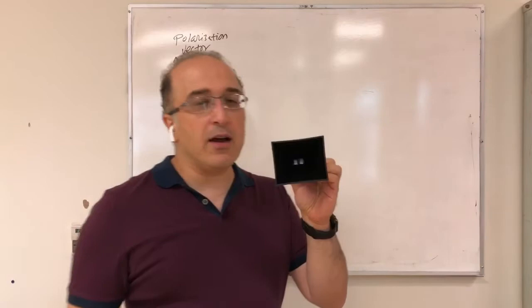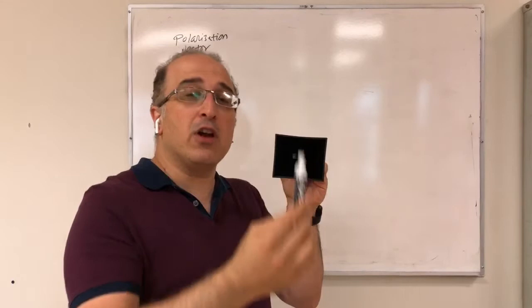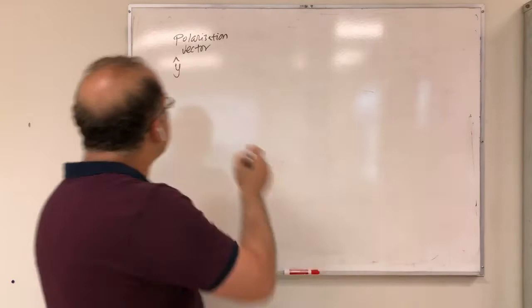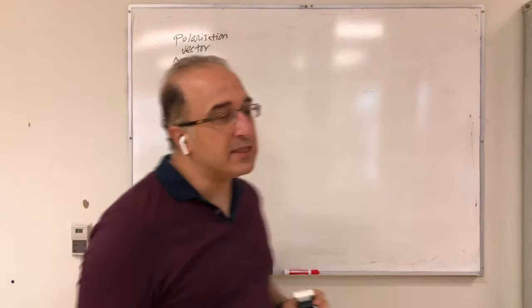Now, for the same antenna, if I rotated it 90 degrees, this was the electric field — you're going to learn later on why this is the electric field. If I rotate it 90 degrees, this is now the electric field, so it could be x-hat. So as you expect, you have only one component for a linearly polarized antenna.